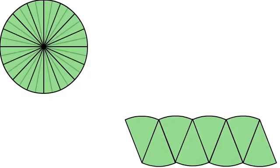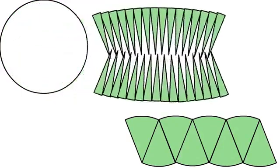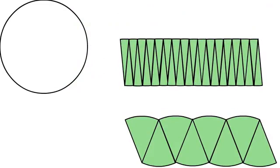So next we will divide the circle into small equal pieces and we will arrange them in the same manner. You can see that it appears more like a rectangle.